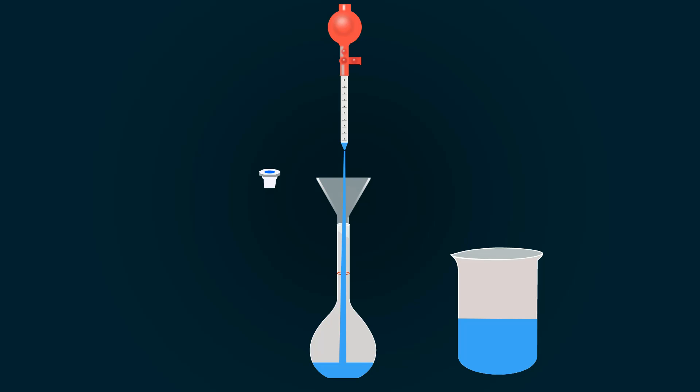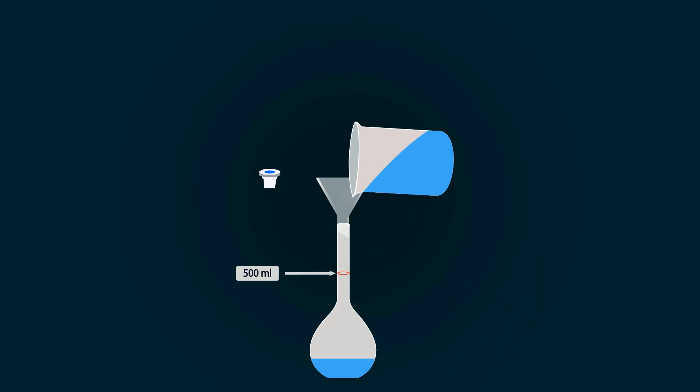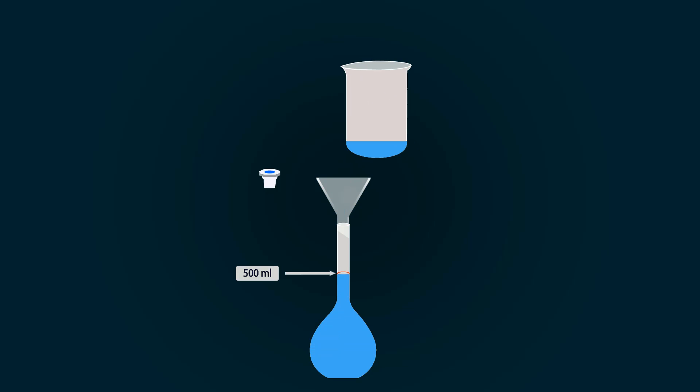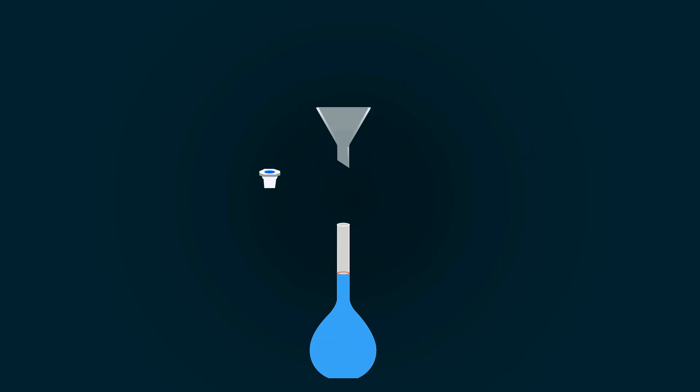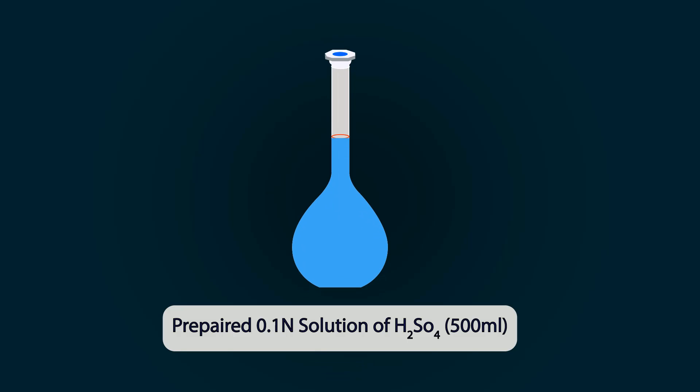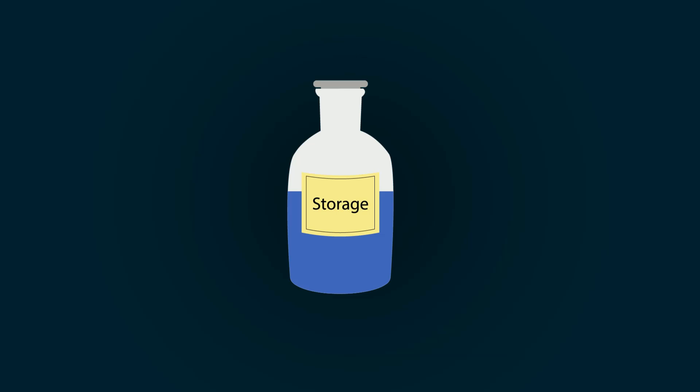As you can see, there is a mark indicating 500 milliliter. Fill with distilled water up to this mark. You have now successfully prepared 0.1 normal solution of H2SO4 up to 500 milliliters. You can store it in any bottle. Thank you.